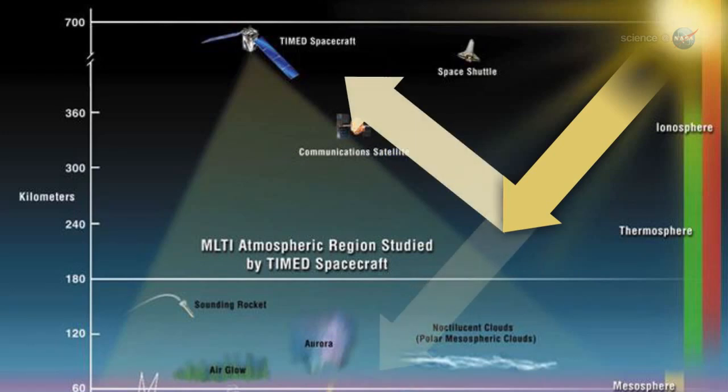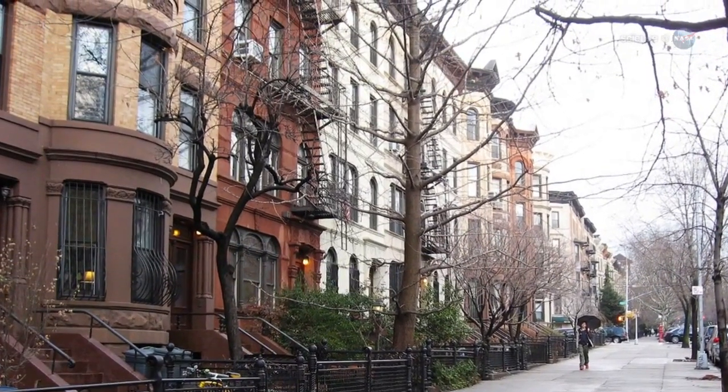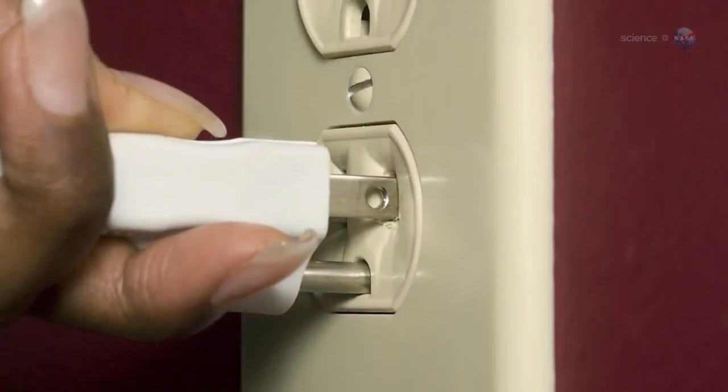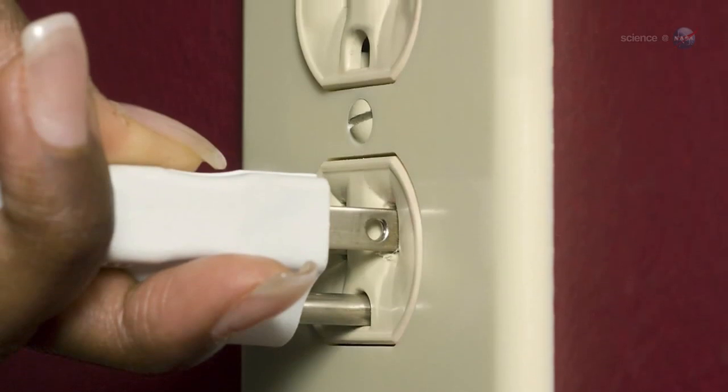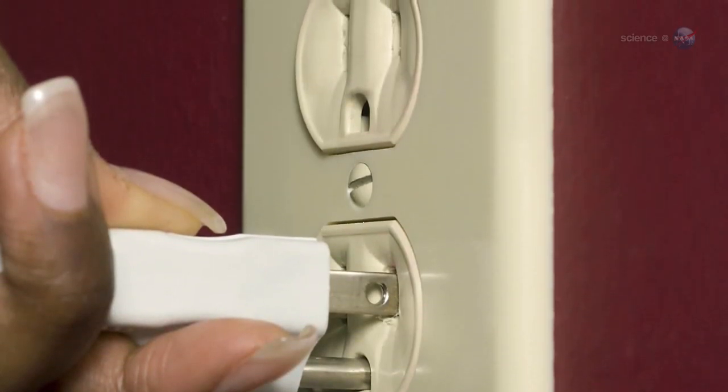In human terms, this is a lot of energy. According to the New York City mayor's office, an average New York household consumes just under 4,700 kilowatt hours annually. This means the geomagnetic storm dumped enough energy into the atmosphere to power every home in the Big Apple for two years.